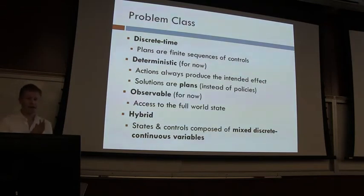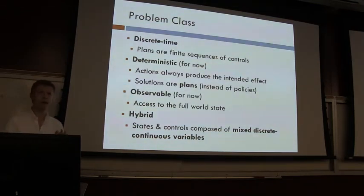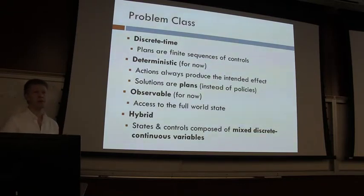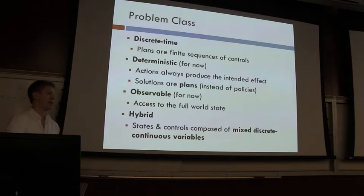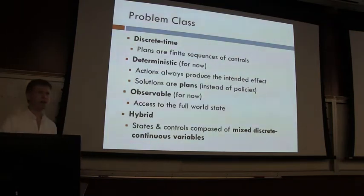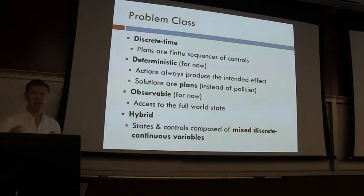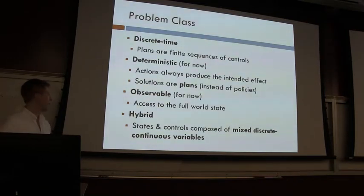The problem class we'll deal with makes some assumptions: problems are discrete time, requiring only a finite number of decisions. These decisions can be parameterized by continuous variables, such as following a trajectory with ten waypoints. We assume things are deterministic — actions always have intended effects — and that state is observable. But our main focus is the hybrid aspect: planning in this combined continuous and discrete state space.